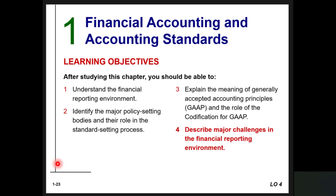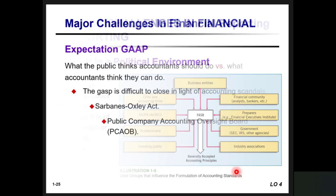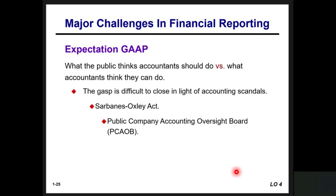Learning objective 4: describe major challenges in the financial reporting environment. GAAP is as much a product of political action as it is of careful logic or empirical findings. User groups that influence the formulation of accounting standards include business entities, CPAs, the AICPA, academicians, the investing public, industry, government, preparers, and the financial community. There is also an expectations gap between what the public thinks accountants should do versus what accountants think they can do. The Sarbanes-Oxley Act was passed in response to accounting scandals such as Enron, and under SOX the Public Company Accounting Oversight Board (PCAOB) was established, with oversight and authority for auditing, quality control, independence standards, and rule setting.